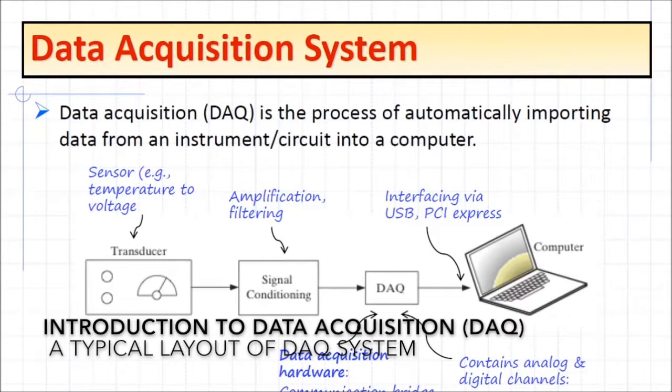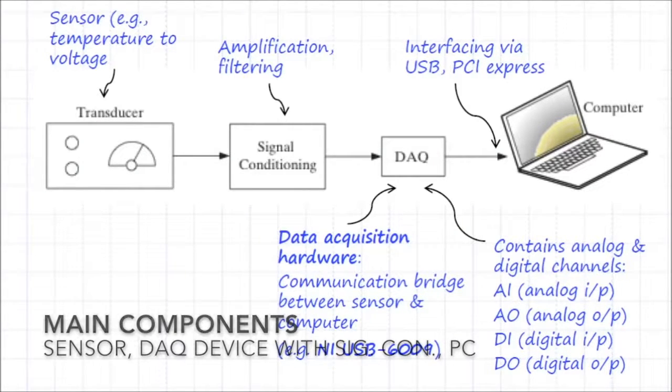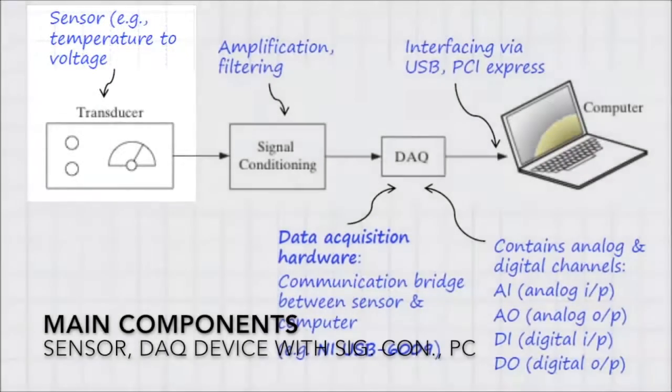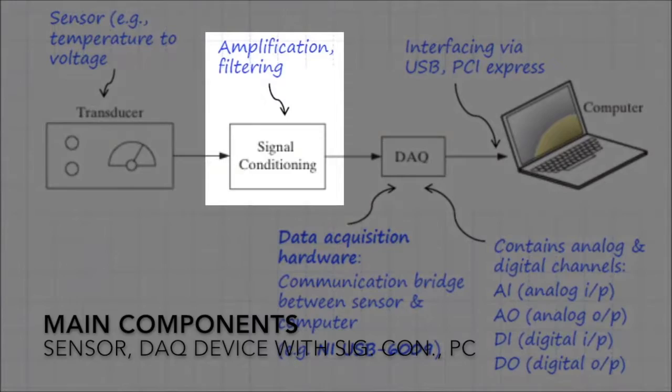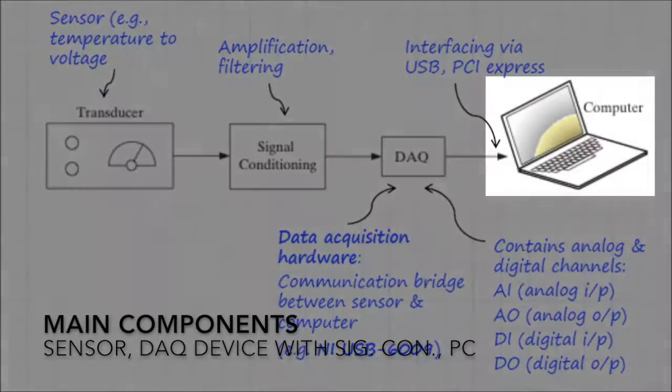Data acquisition is the process of getting signals in the form of voltage or current from a transducer such as a sensor and storing it in a computer for analysis purposes. This block diagram shows you a typical data acquisition system. The main components are a transducer such as a sensor, signal conditioning in the form of amplification and filtering, the DAQ hardware, and the computer.